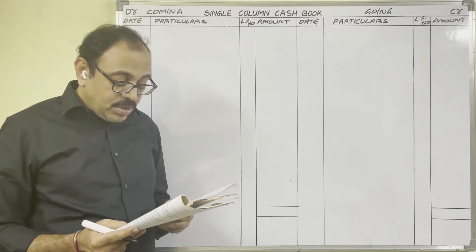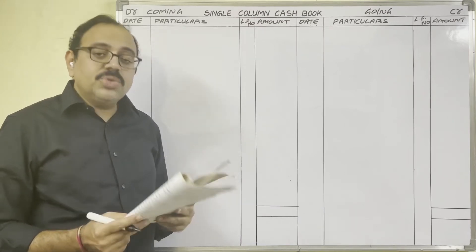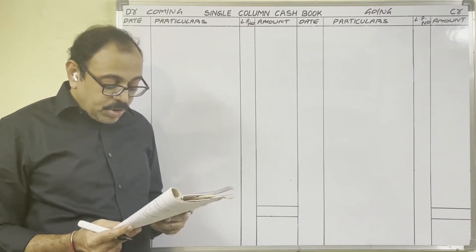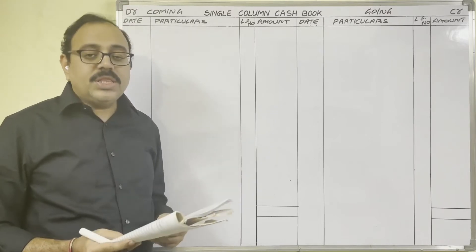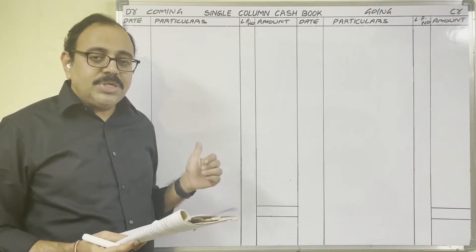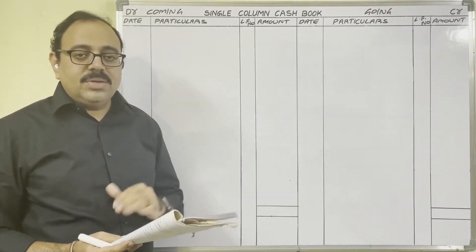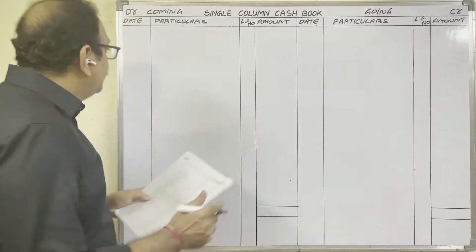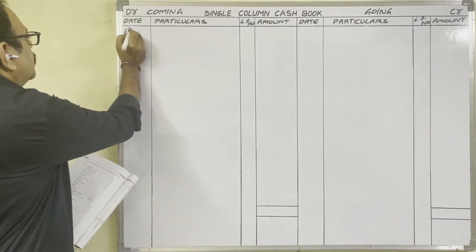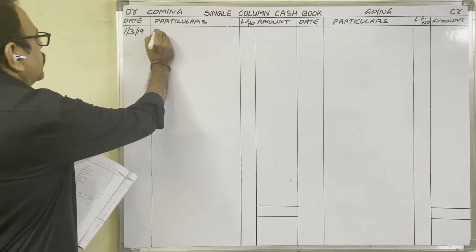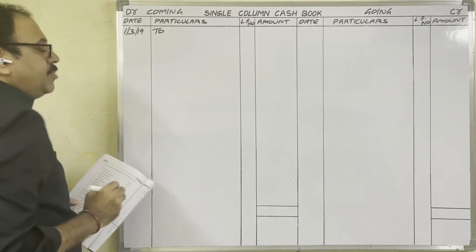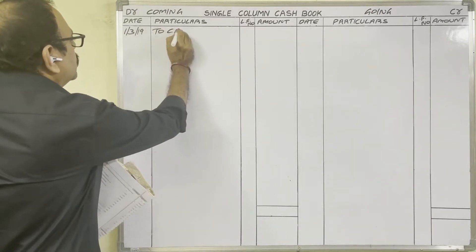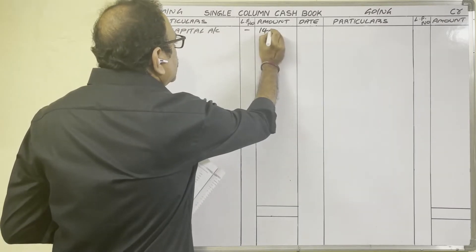Prepare simple cash book as on 31st March 2019. 1st March 2019: the owner brought cash into business — 14,000 rupees — to start the business. Cash is coming into the firm, so debit side. Write: 1st March 2019, To Capital account, 14,000 rupees.